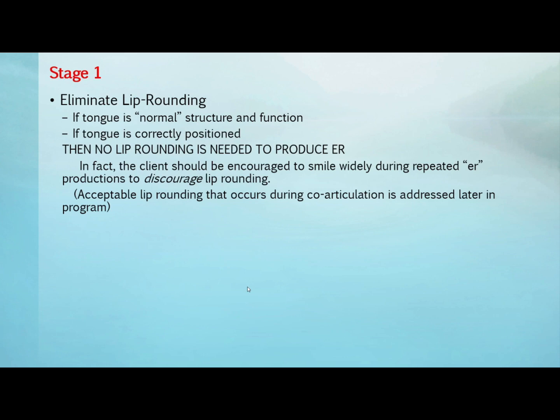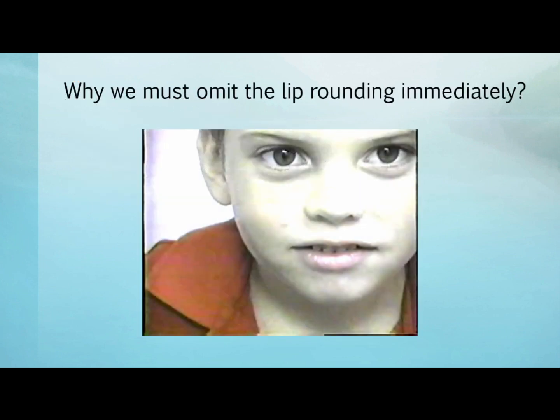When we reach the section that deals with co-articulation, at that time lip rounding is incorporated as part of the natural movements between sounds and words, but not until such time. Let's see what often happens when we don't go this preferred route. The following video exemplifies exaggerated attempts at ER production. If you observe carefully, you'll see that other sounds have likewise been affected.